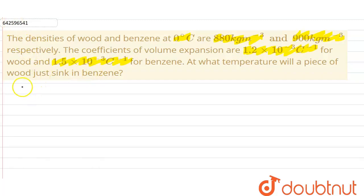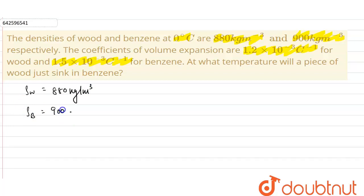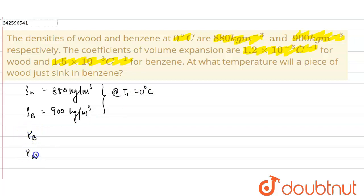So what we have been given is: density of wood is 880 kg/m³ and density of benzene is 900 kg/m³. These densities are given at 0°C. We are also given the coefficient of volume expansion for wood as 1.2×10⁻³ per °C and for benzene as 1.5×10⁻³ per °C. We are asked at what temperature the piece of wood just sinks in benzene.